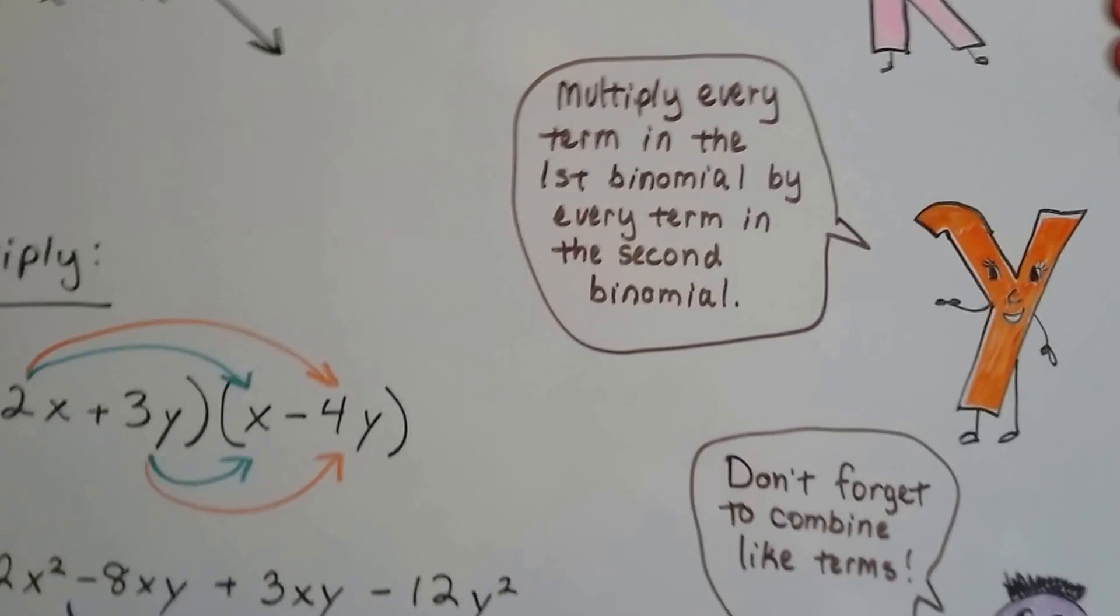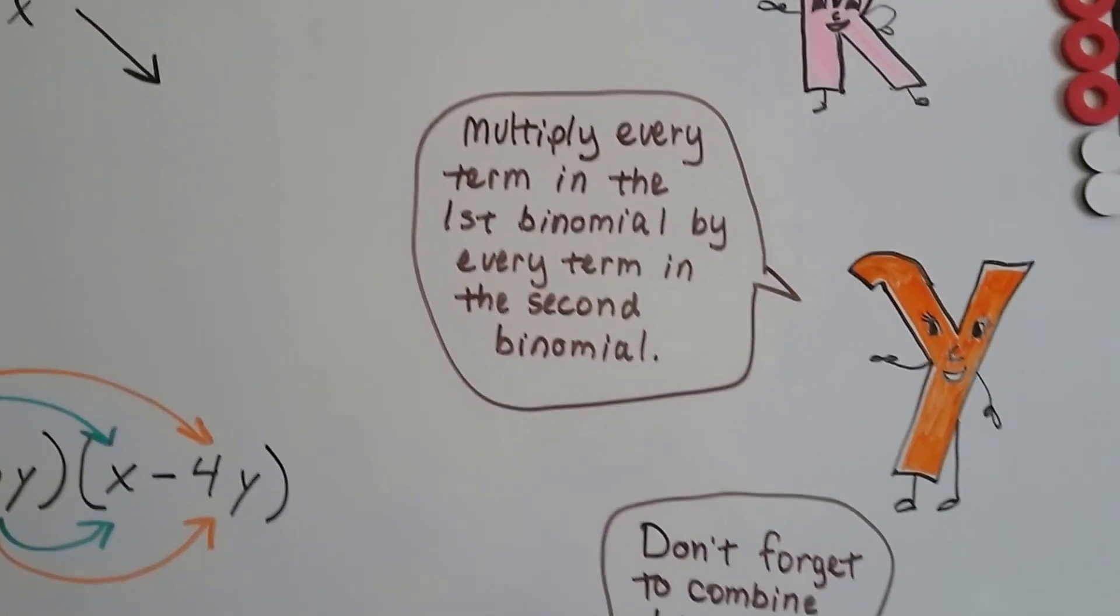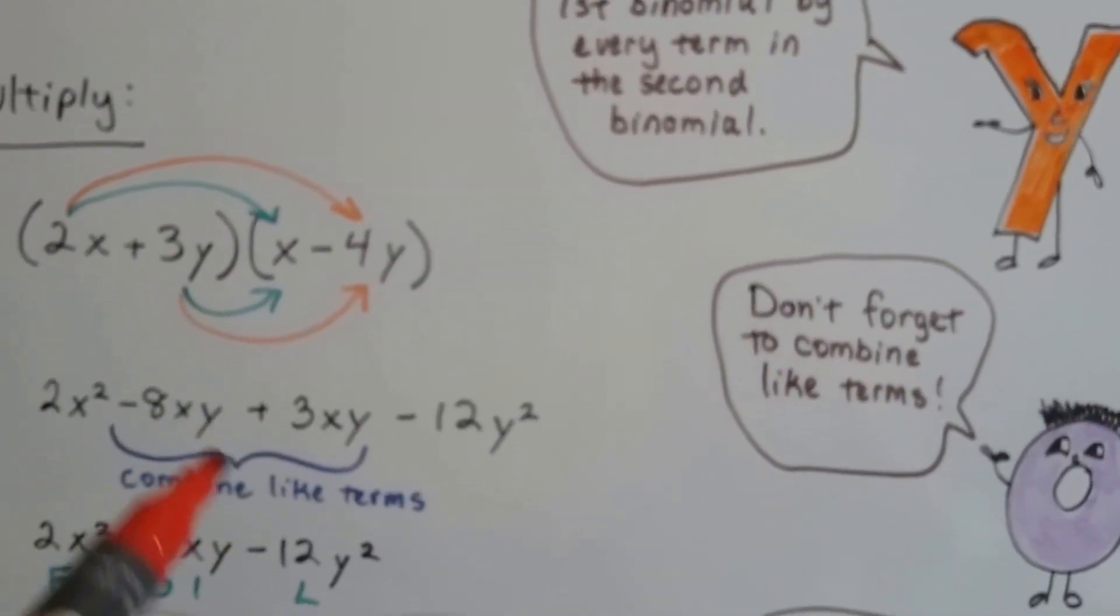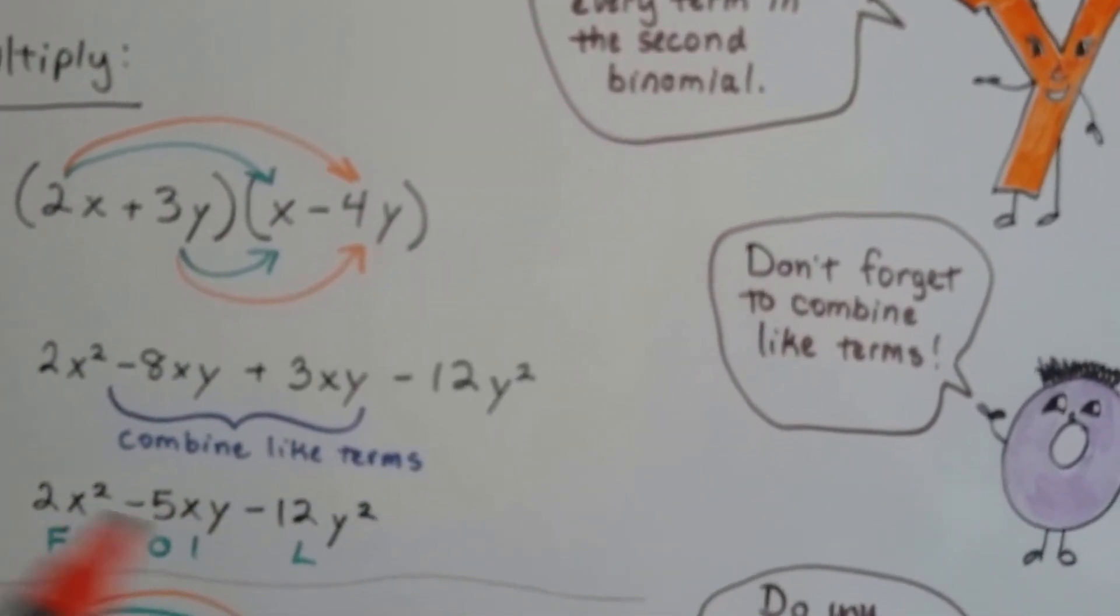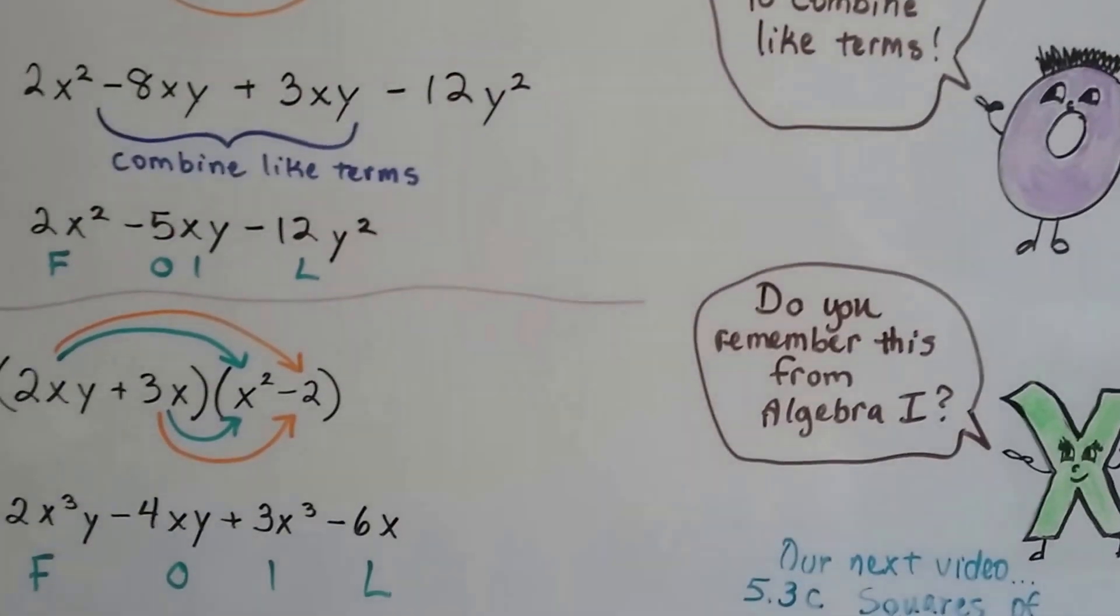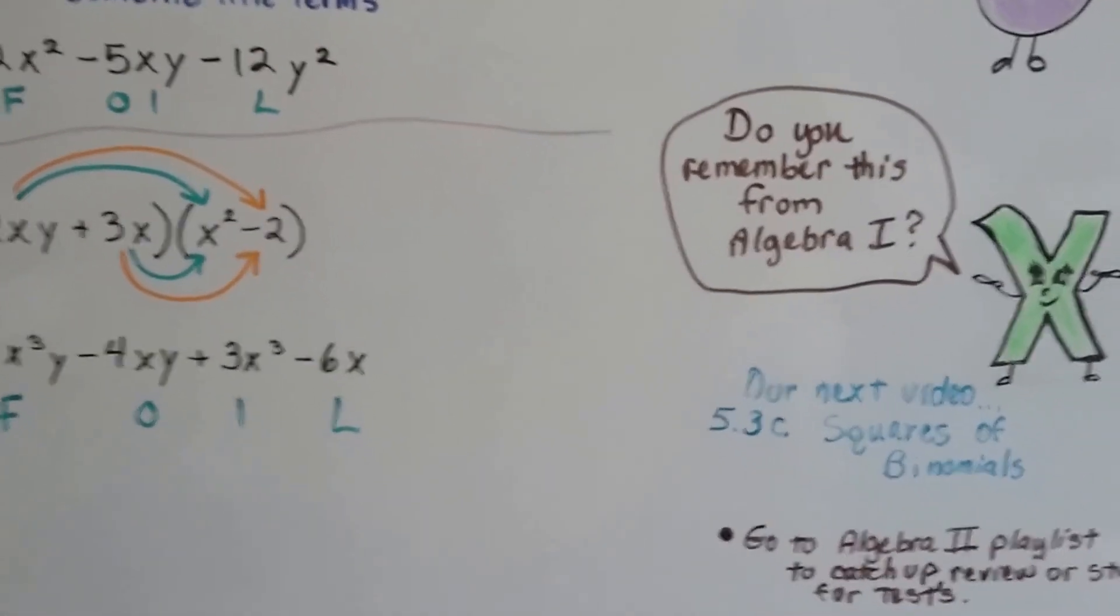What's happening is we're multiplying every term in the first binomial by every term in the second binomial. And don't forget to combine like terms. We weren't done here. We had to combine those like terms to get the negative 5xy. So I don't know if you remember this from Algebra 1, but we did this. And if this is the first time you're seeing it, I hope it helped.